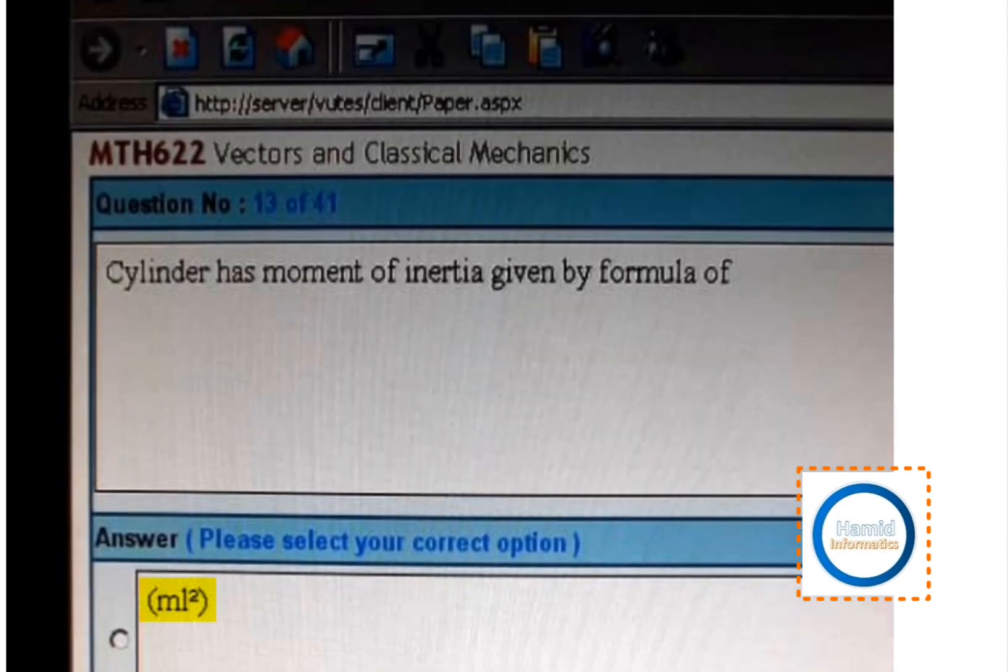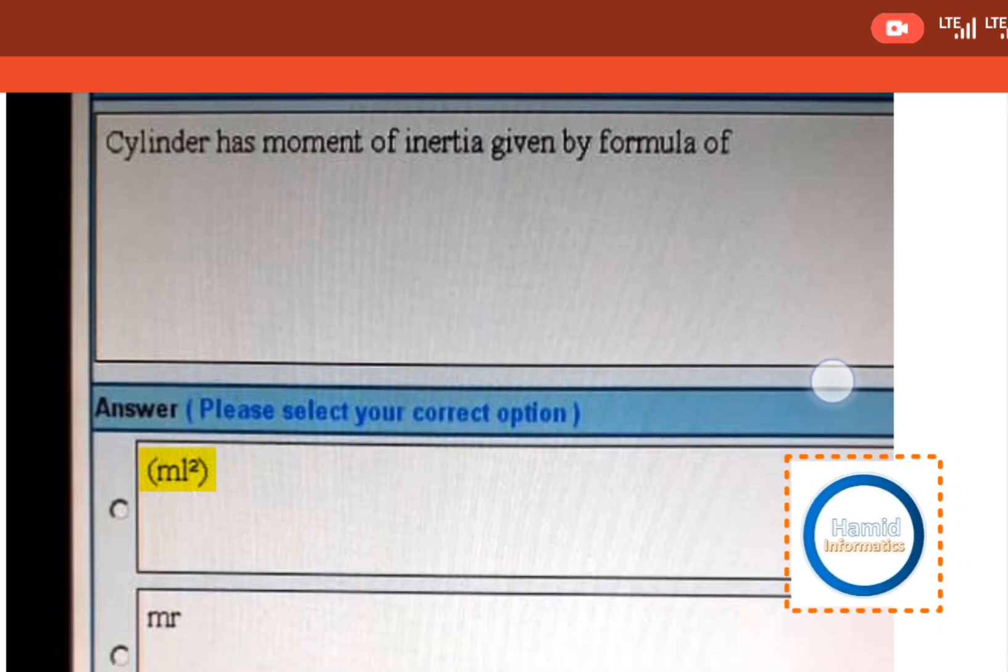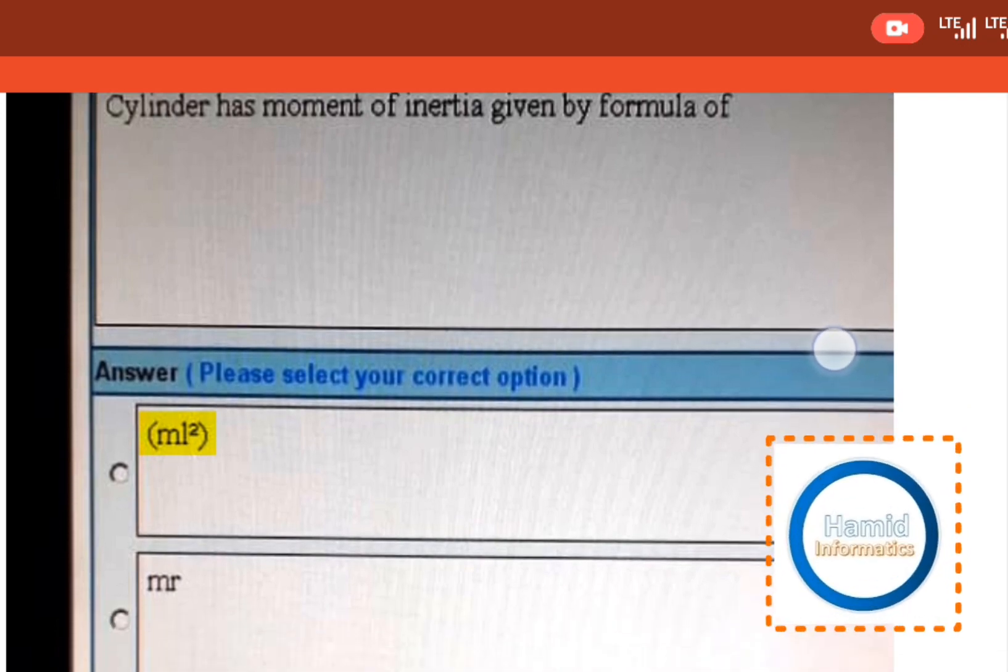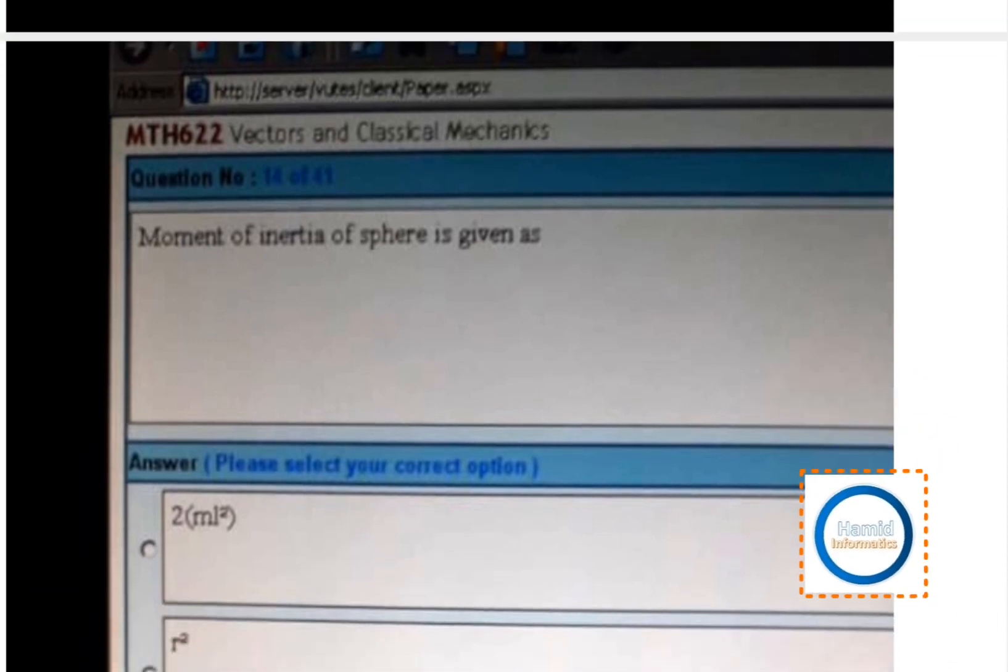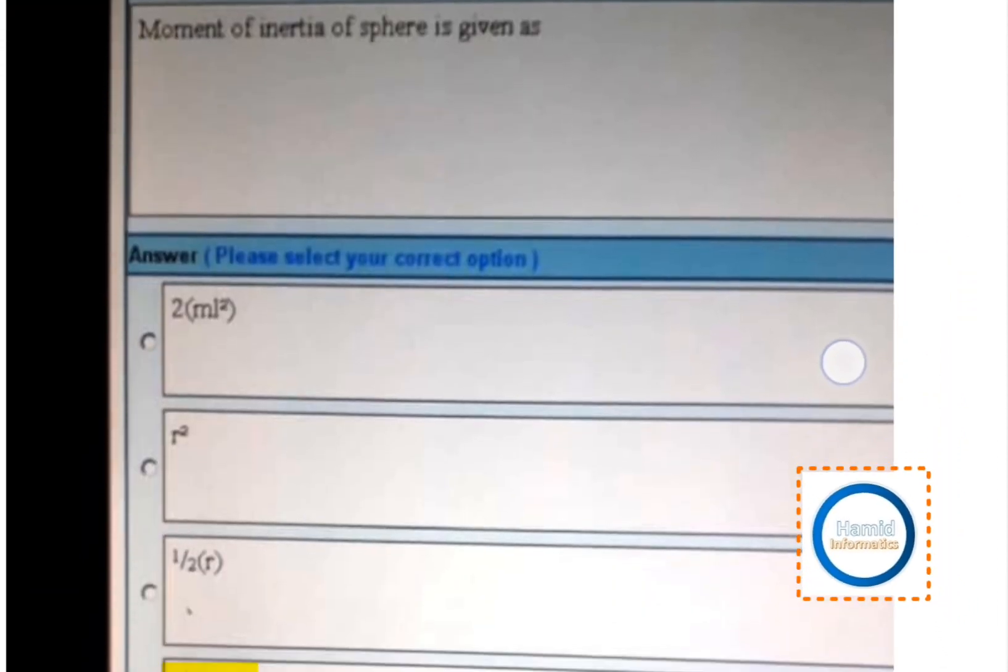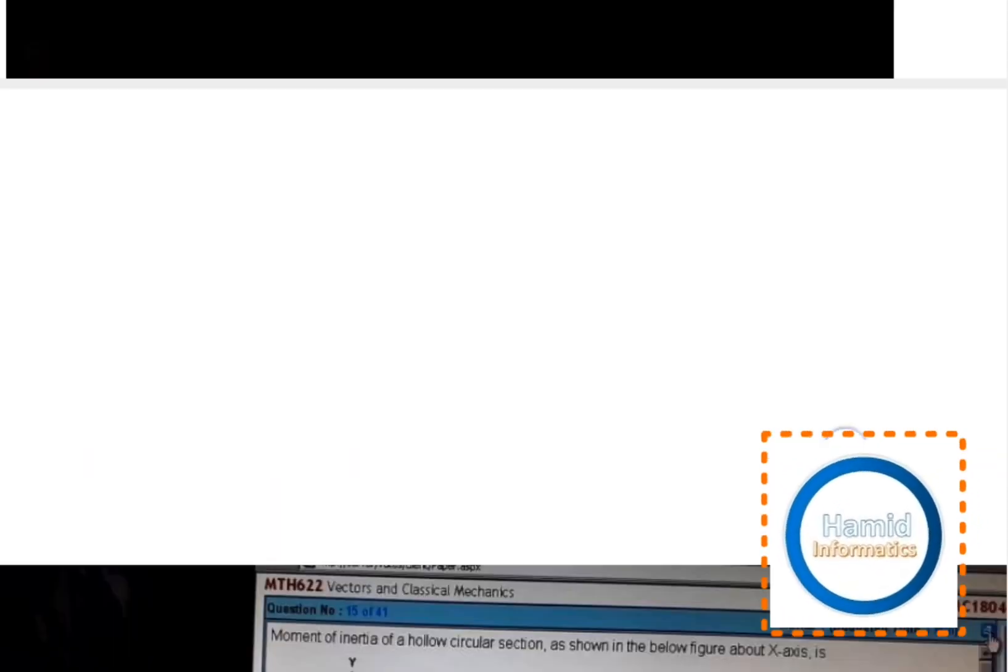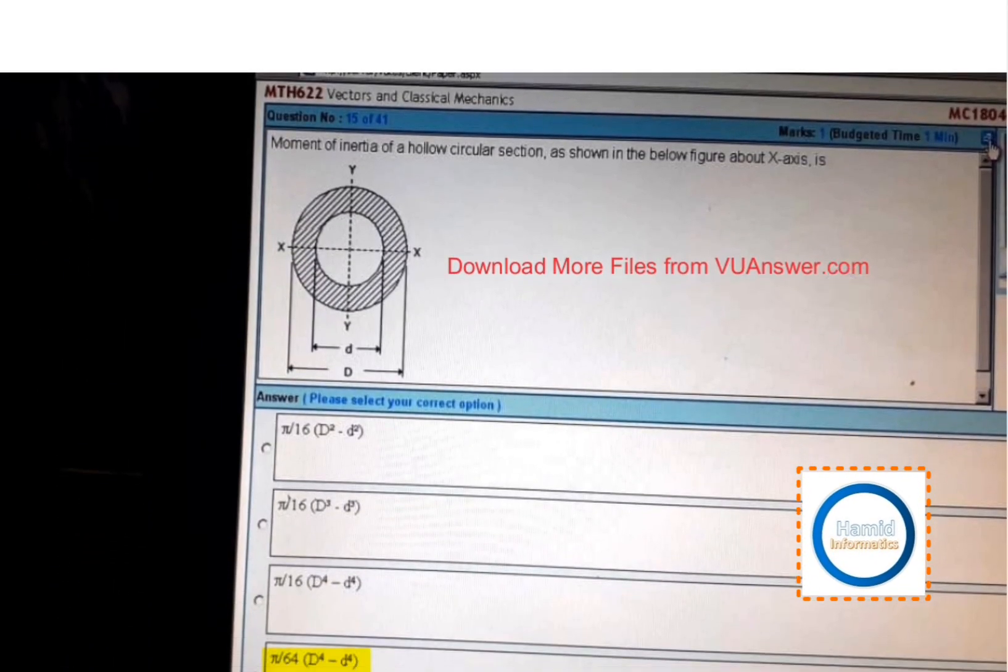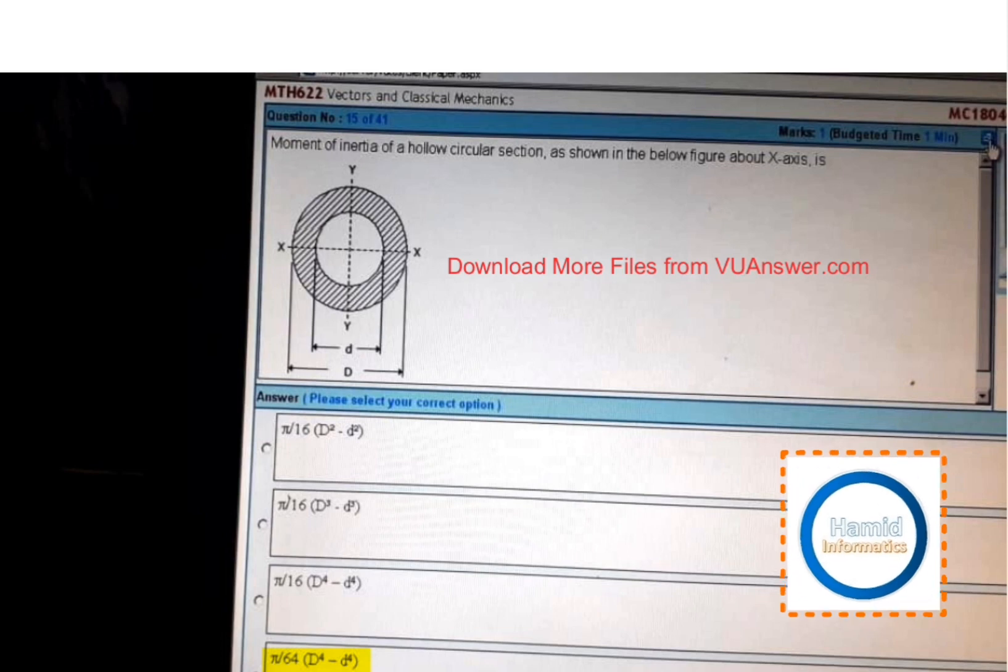Next, cylinder has moment of inertia given by the formula ml square. Next, moment of inertia of a sphere is given by two-fifths mr square.